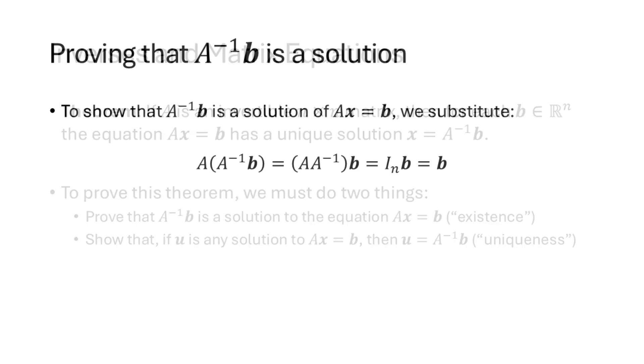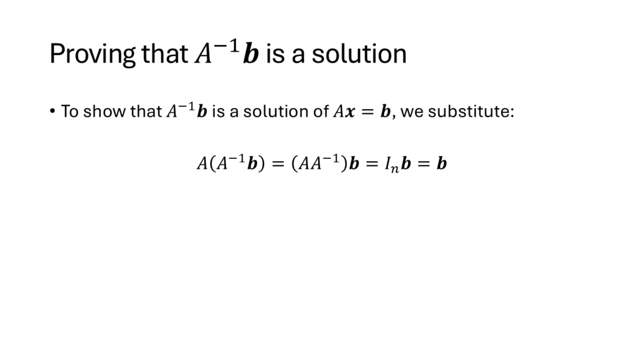So let's talk about the existence part. All we have to do is show that this vector A inverse B works as a solution to the equation AX equals B. So that means if we plug it in for the X, the left-hand side equals the right-hand side. And here as you can see, if we put A inverse B in for the X, we do in fact get A times A inverse B equaling B.